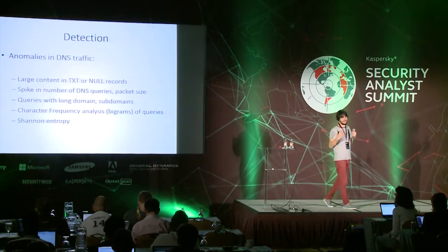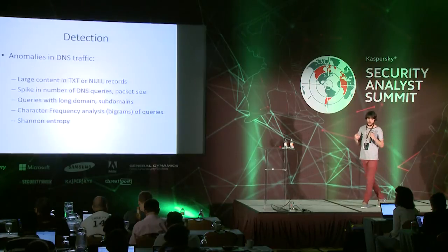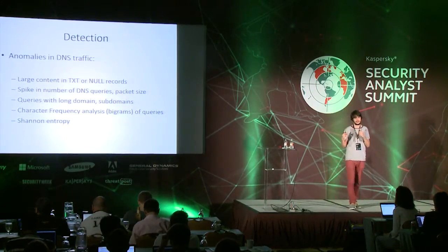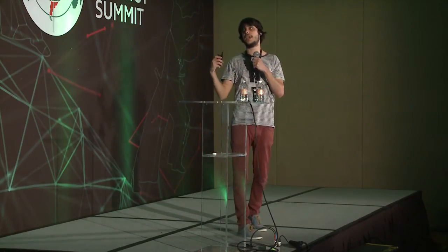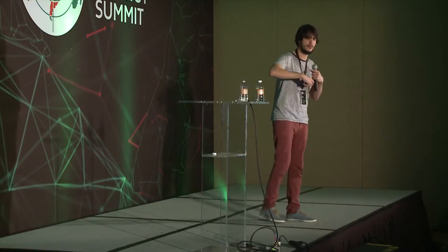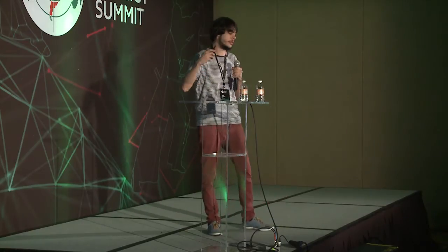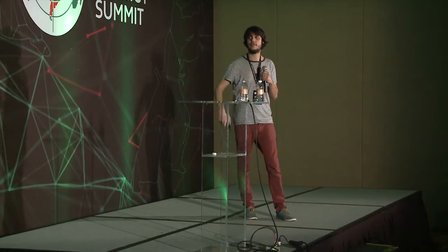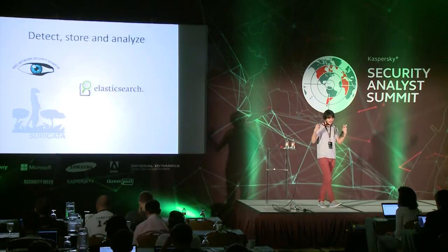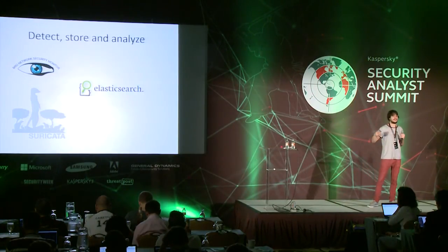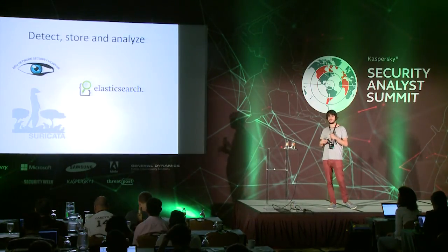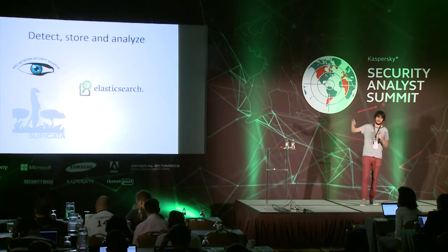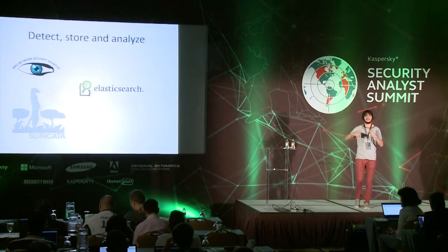Detection: how can we detect this kind of thing? First, detect large content in TXT and NULL records — those are the most used techniques, so alert when you see those records in your network. Watch for a spiking number of DNS queries and packet sizes — when we executed these malware samples, they always issued a huge amount of DNS queries with large labels. Also look for queries with long domain names, labels, and FQDNs. We can even perform character frequency analysis using N-grams and other techniques, or using Shannon entropy of the labels and FQDNs. Both Snort and Suricata contain modules that can log the metadata of DNS queries and responses, and you can send that data to Elasticsearch to detect anomalies in the traffic.